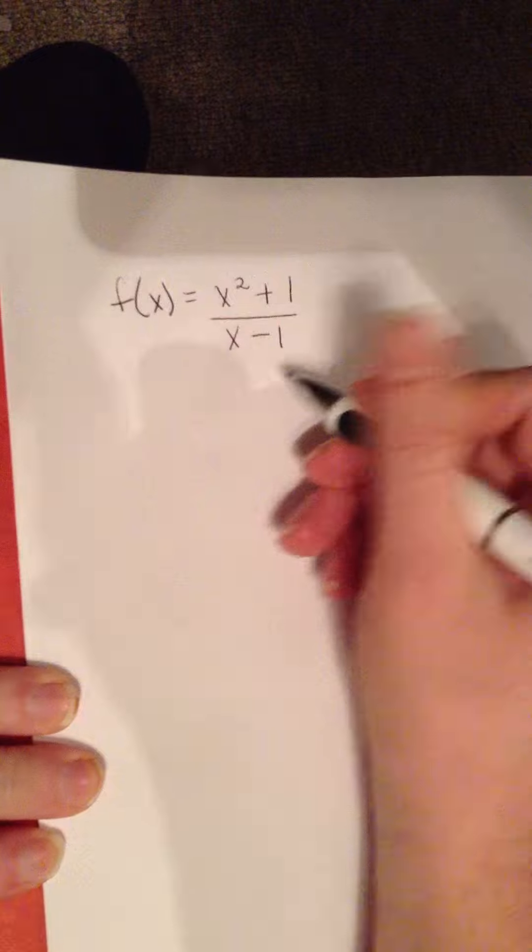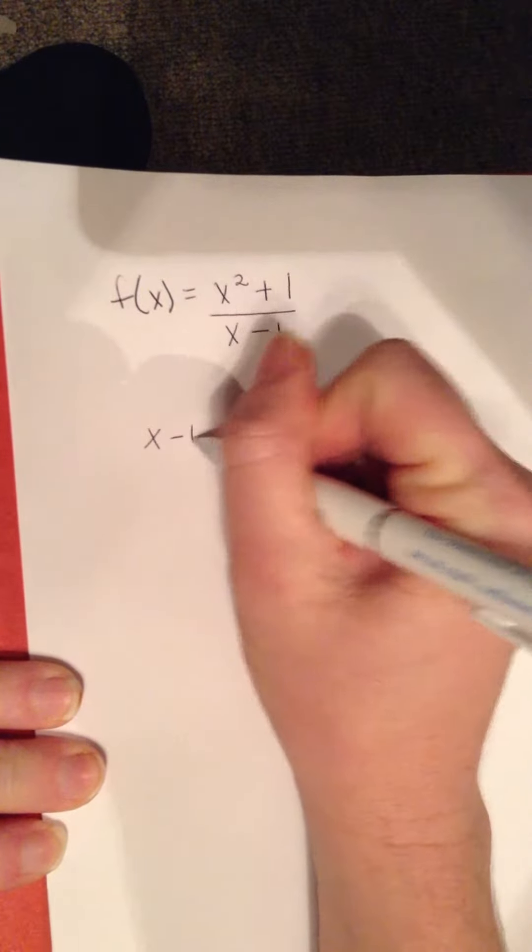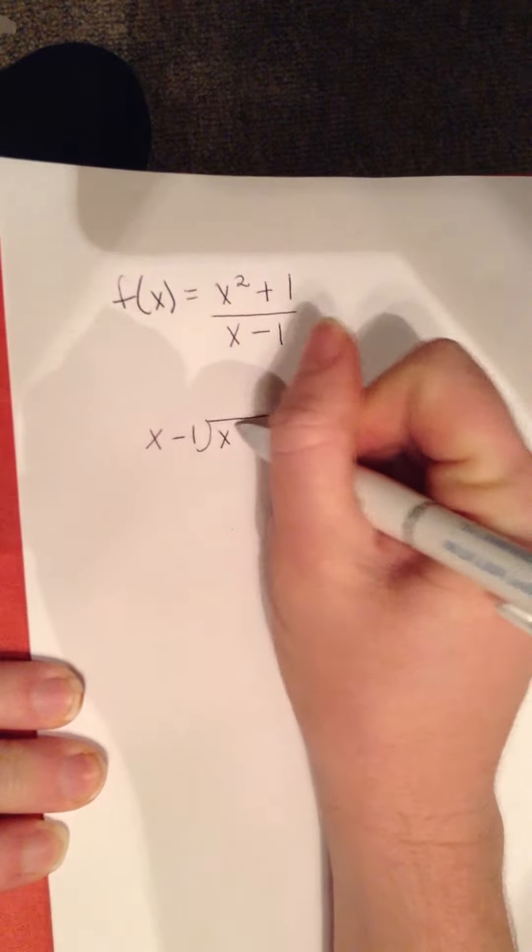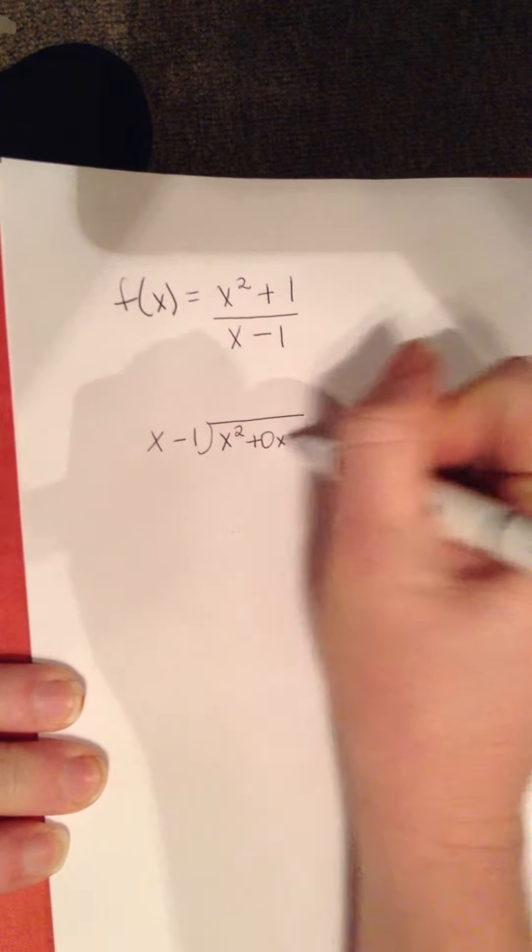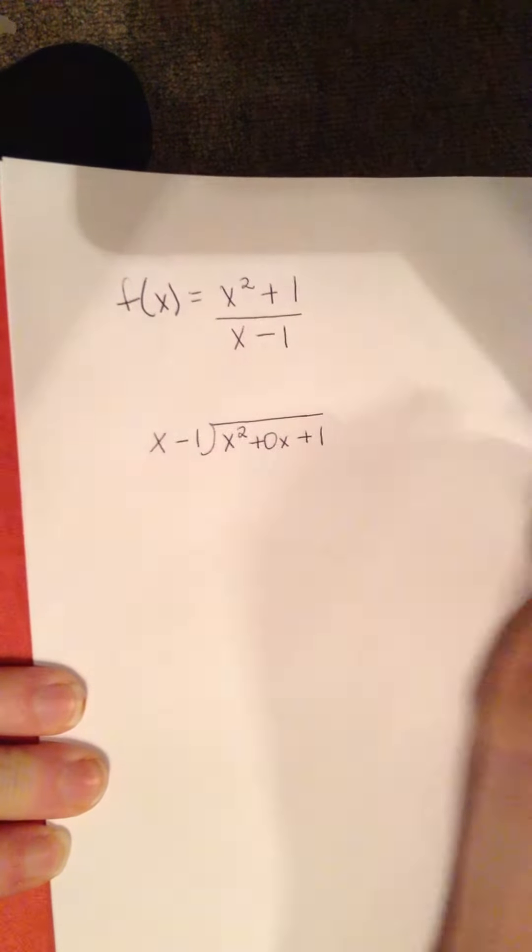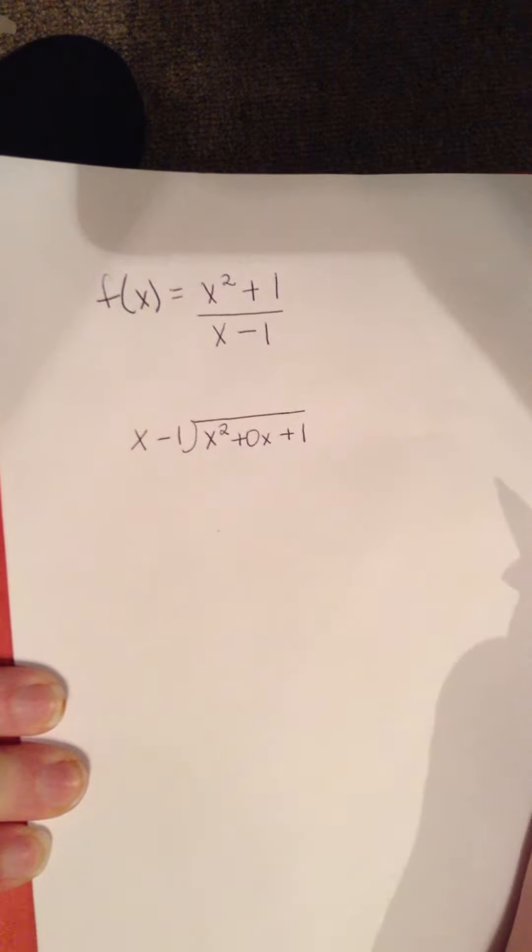You can use long division if you'd like. If we were going to set this up with long division, it would be set up like this. Don't forget, you have to put a placeholder if you're missing any of the descending exponents. So this one would be set up like this if we were doing long division.